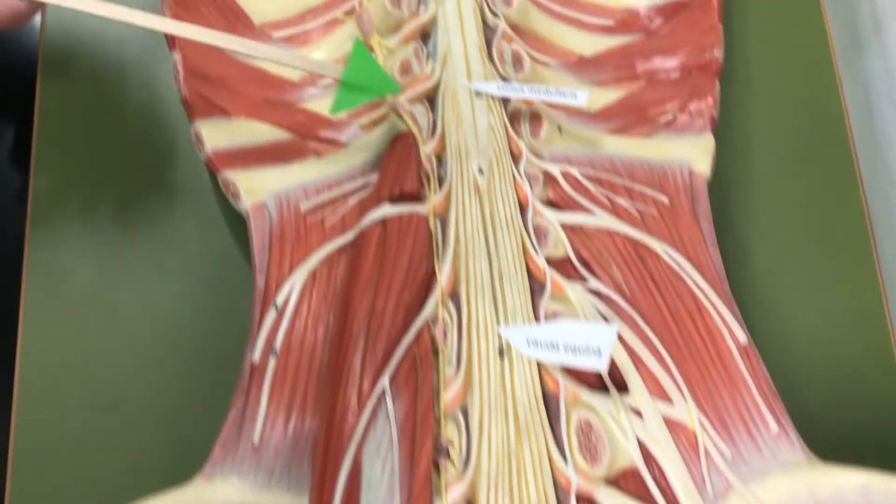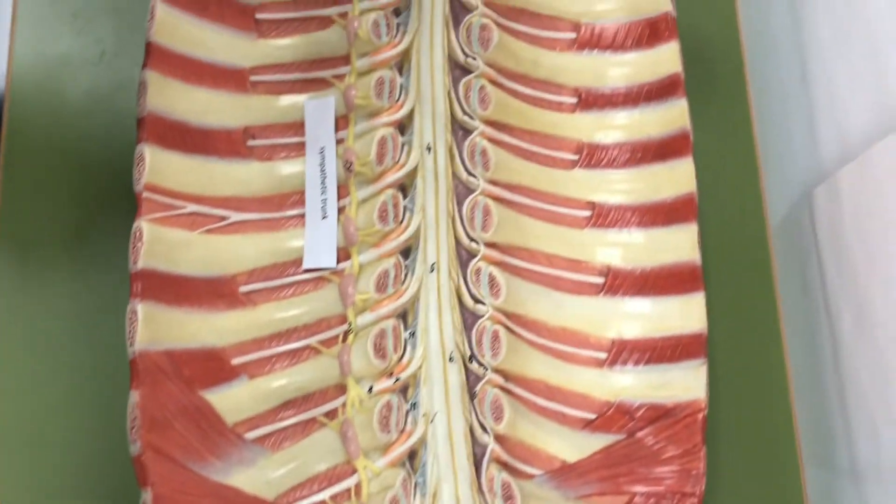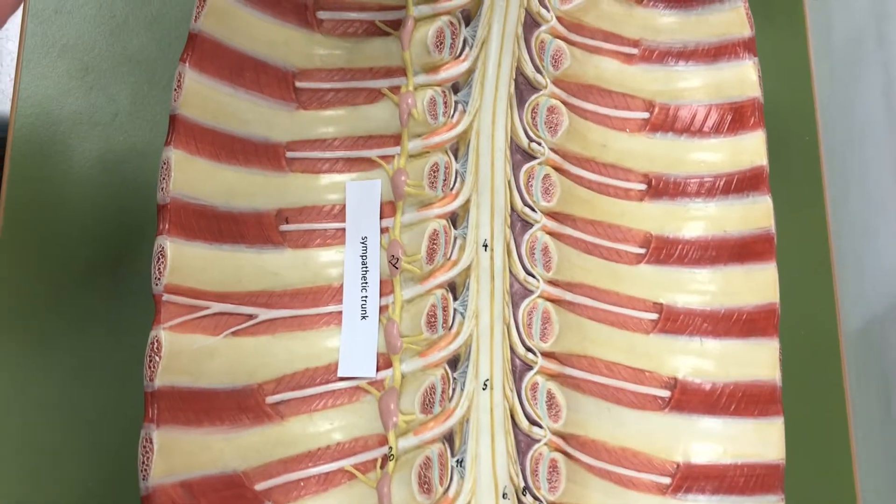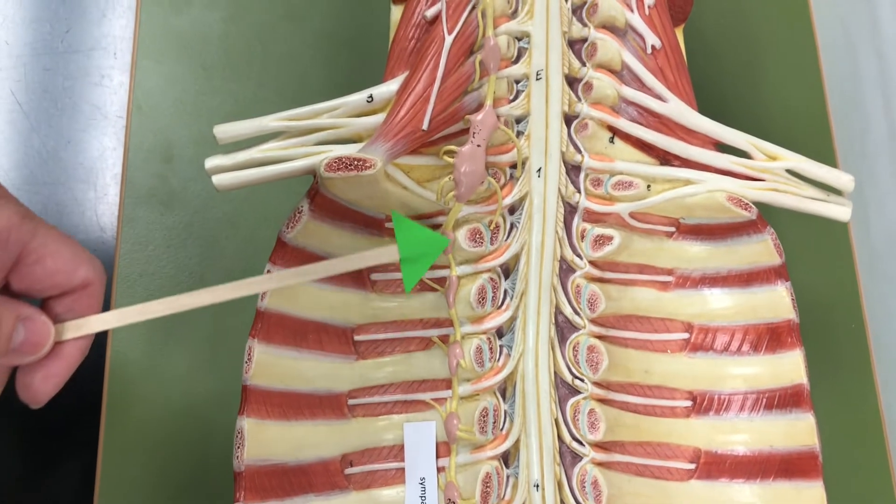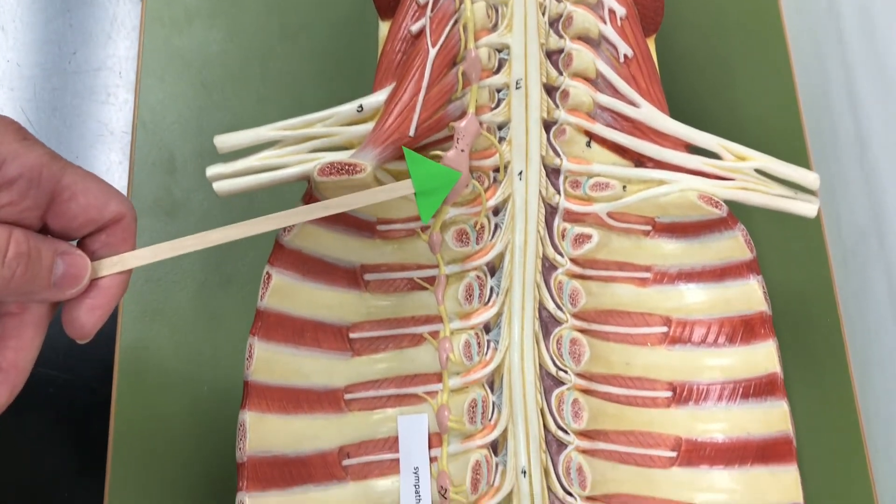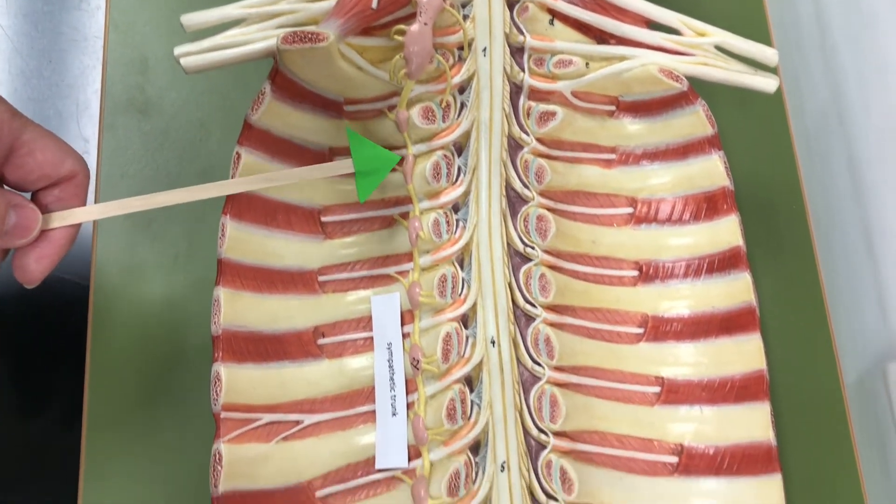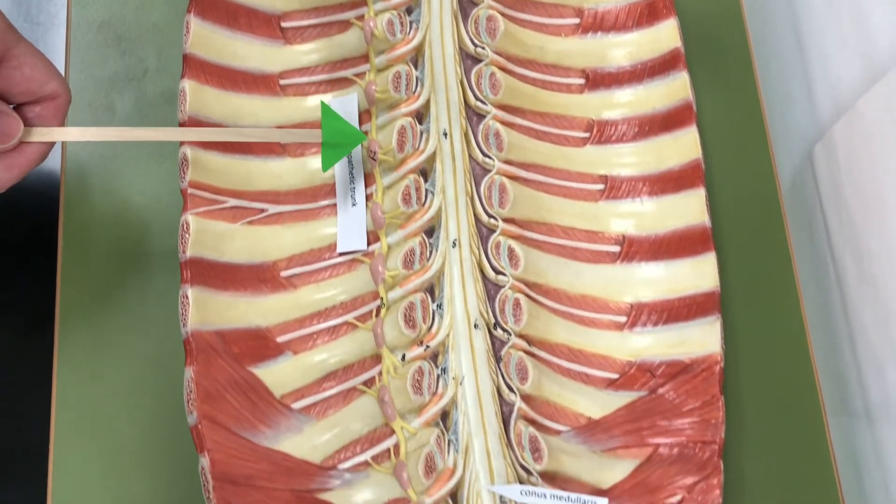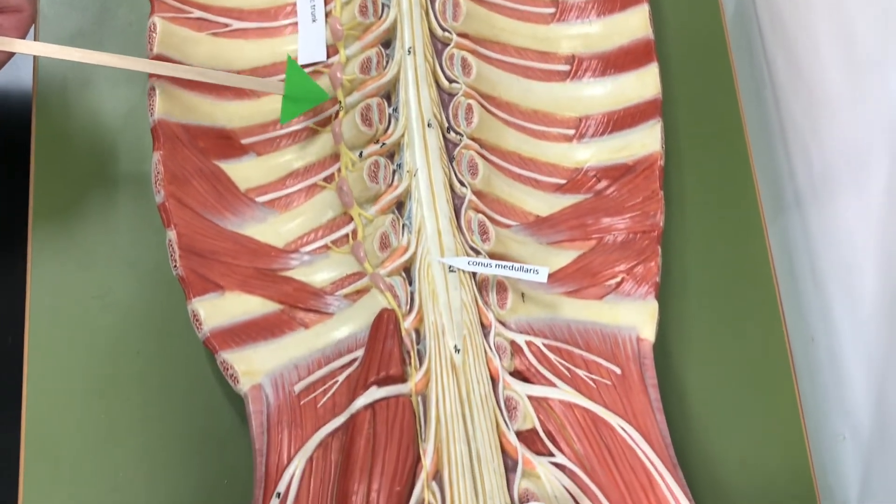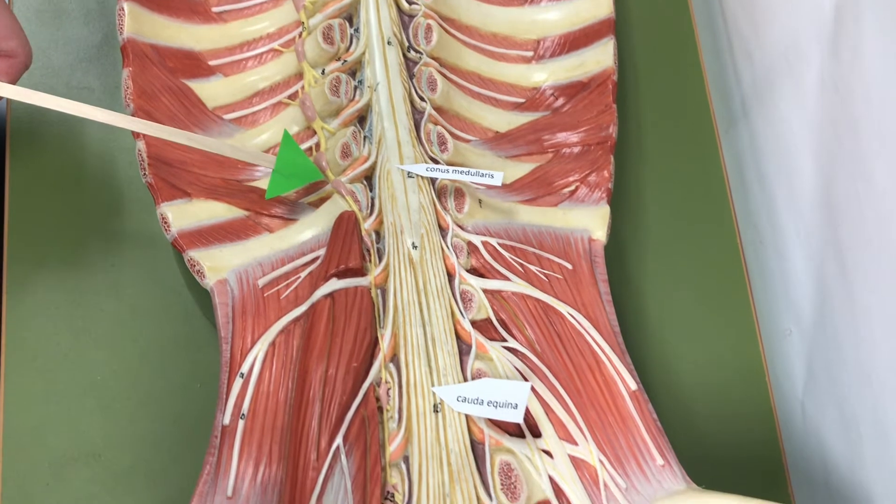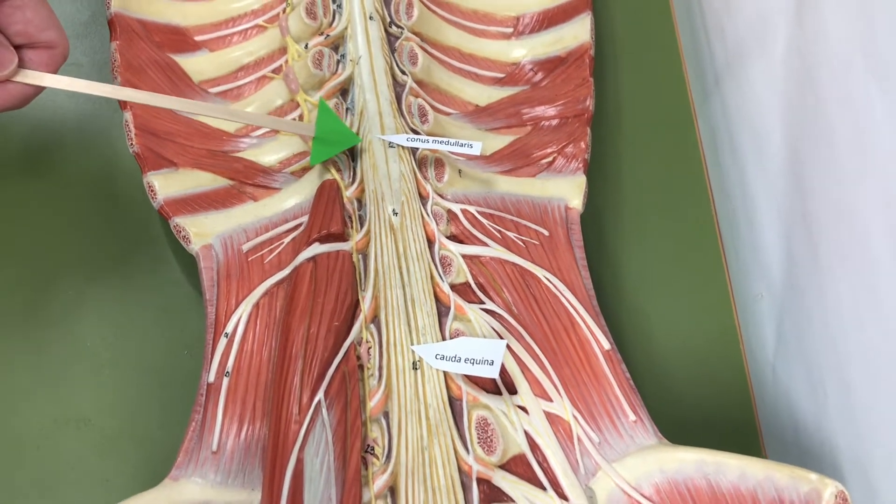On the side of the spinal cord, we have the sympathetic trunk. The sympathetic trunk runs parallel to the spinal column and contains the sympathetic ganglia so it can communicate with the spinal cord.